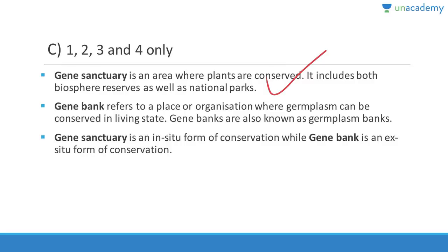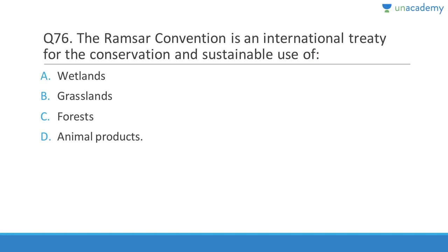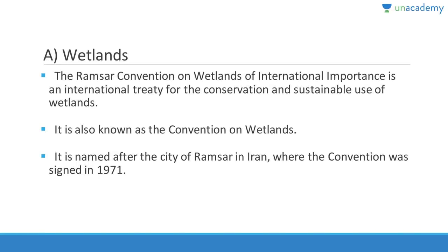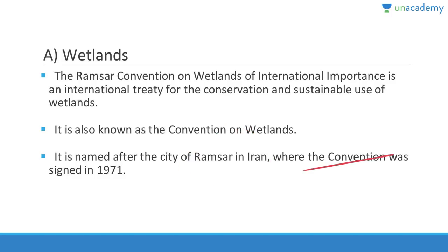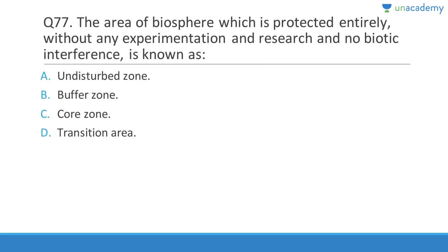Question 76: The Ramsar Convention is an international treaty related to wetlands. It is named after the city of Ramsar in Iran, where the convention was signed in 1971. It is formally called the Convention on Wetlands of International Importance and focuses on the conservation and sustainable use of wetlands.